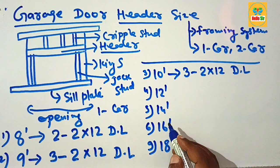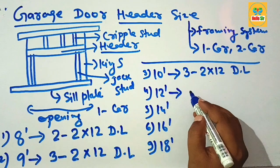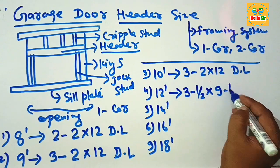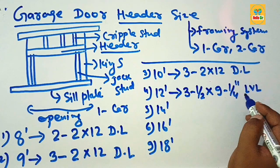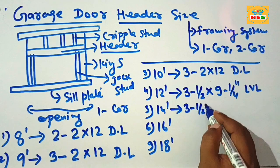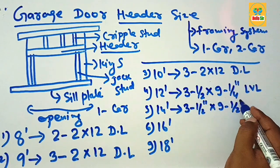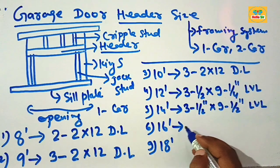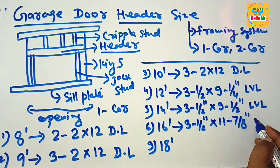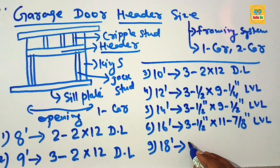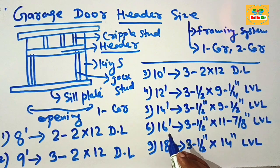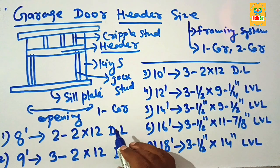From 12-foot to 18-foot opening, this is the opening for a double car garage door. For a 12-foot wide opening, you should use 3.5 inches thick and 9.25 inches deep LVL as the header. For a 14-foot opening, use 3.5 inches thick and 9.5 inches deep LVL. For a 16-foot opening, use 3.5 inches thick and 11.875 inches deep LVL header. For an 18-foot opening, use 3.5 inches thick and 14 inches deep LVL.